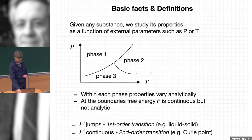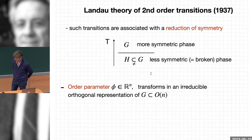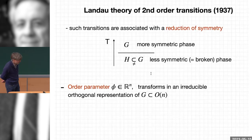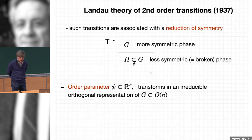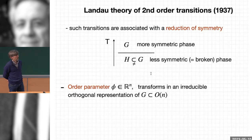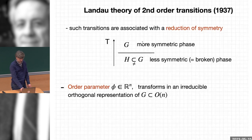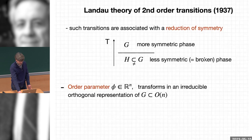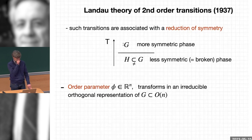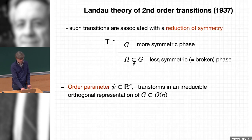For this talk I'm going to focus on second-order transitions. The first successful theory of second-order transitions was built by Landau in 1937. Landau understood that second-order transitions are most often related to a change in the symmetry of the substance — a reduction of symmetry. When you vary some parameter like temperature, you have a more symmetric phase and a less symmetric phase, also called the broken phase. This is formulated mathematically in terms of group theory: there is a group G associated with the more symmetric phase and a proper subgroup H associated with the less symmetric phase.